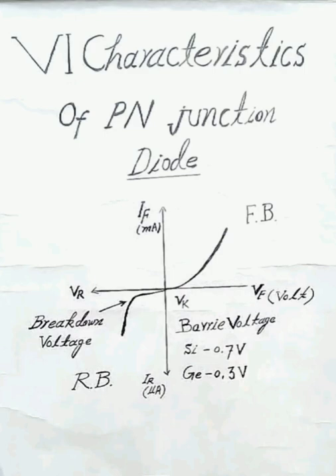The VI characteristics of a PN-junction diode in forward bias show forward current increasing in a nonlinear way after the forward bias voltage exceeds VK, the knee voltage. Beyond this point, the diode acts like a closed circuit.